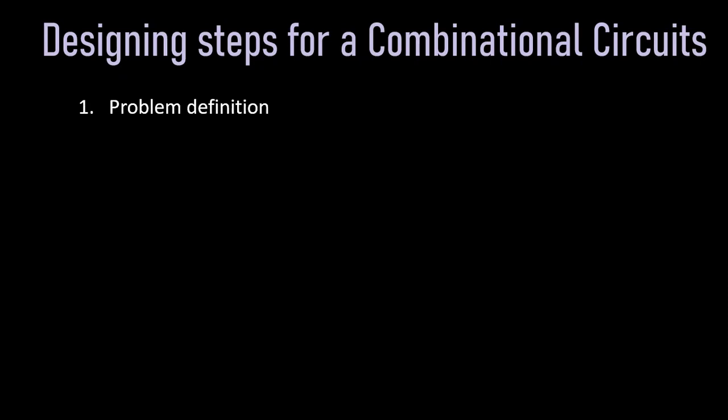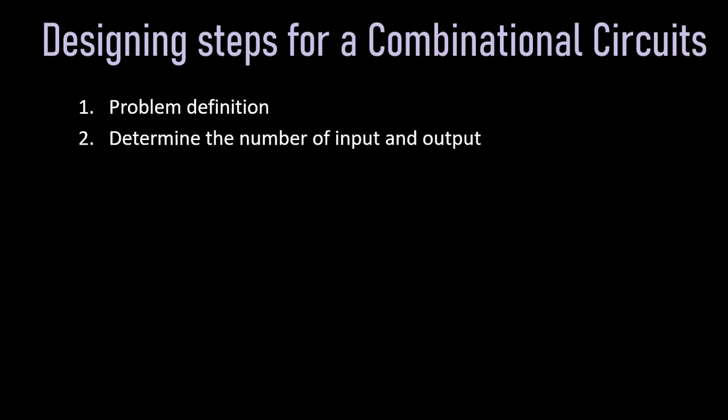In this video tutorial we will discuss the designing steps for a combinational circuit. The very first step is to observe our problem statement — what is the problem we are going to design a combinational circuit for. In the next step, we will determine the number of inputs and outputs used for that circuit.